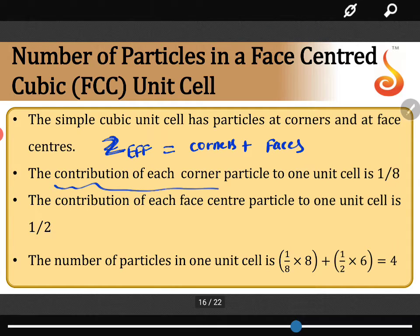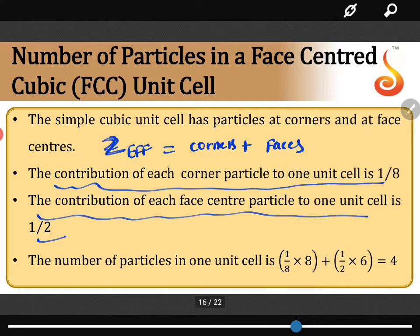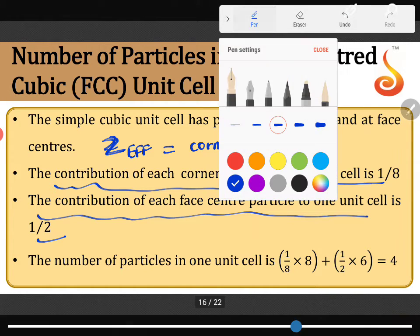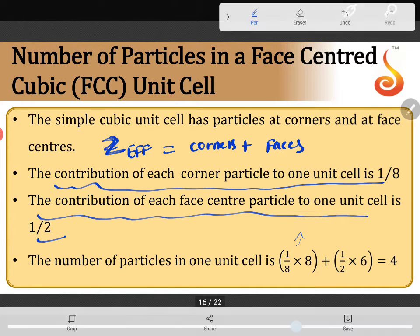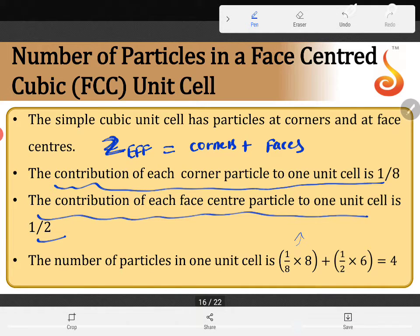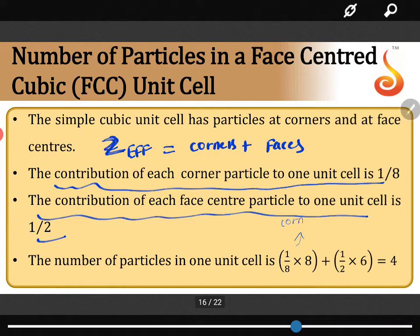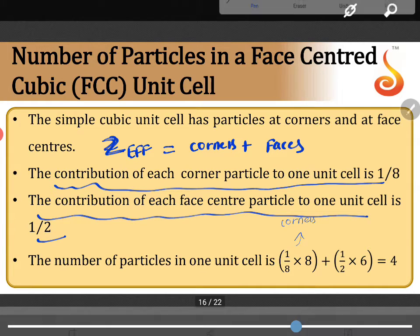The contribution of each corner is one by eight, the contribution of each face is one by two. So the number of particles in one unit cell - this is the number of particles present at corners. In the previous video, we calculated the number